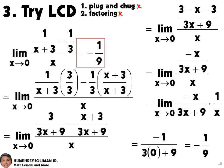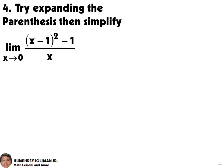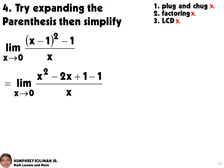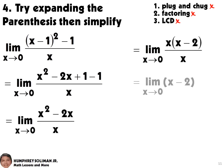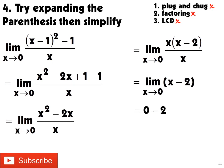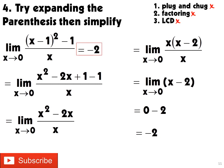For our next example, we can check that plug and chug, factoring, and LCD will not work. We will try another option, which is expanding parenthesis, then simplifying the function. And then, we will try plug and chug after we simplify the function. This will give us negative 2, and this is already the answer. There are more options for solving for the limit of a function, and we will have that in our next video.